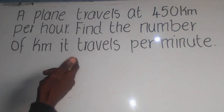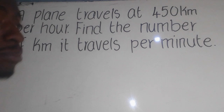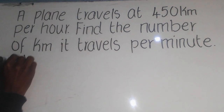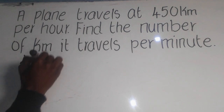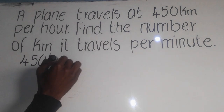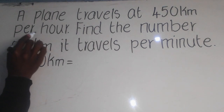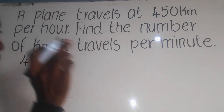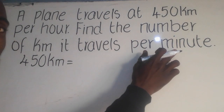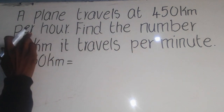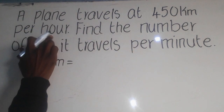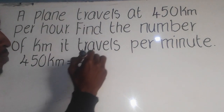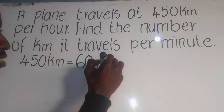Since we are talking about direct proportion, we have to say: for 450 kilometers, it is equal to 1 hour. Don't say 1 hour because they want our answer in minutes. We know that 1 hour is equal to 60 minutes. So here, you put 60 minutes there.